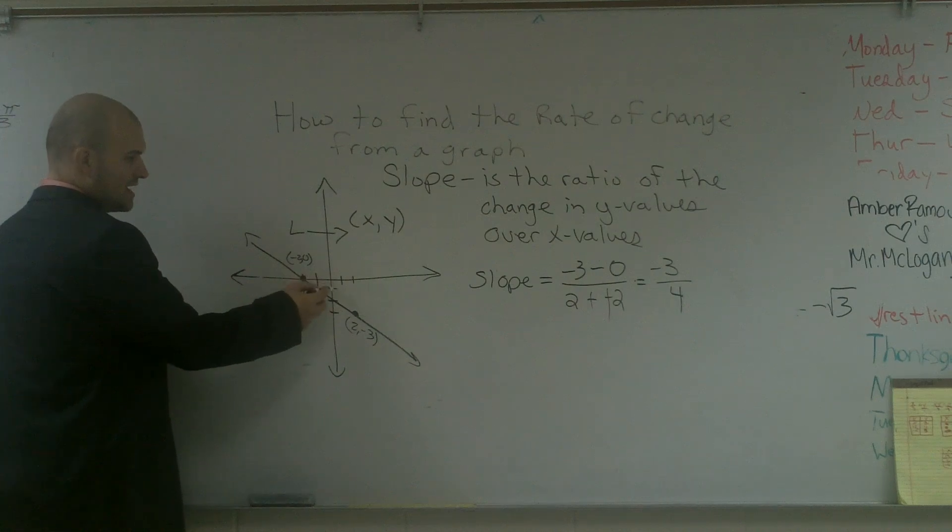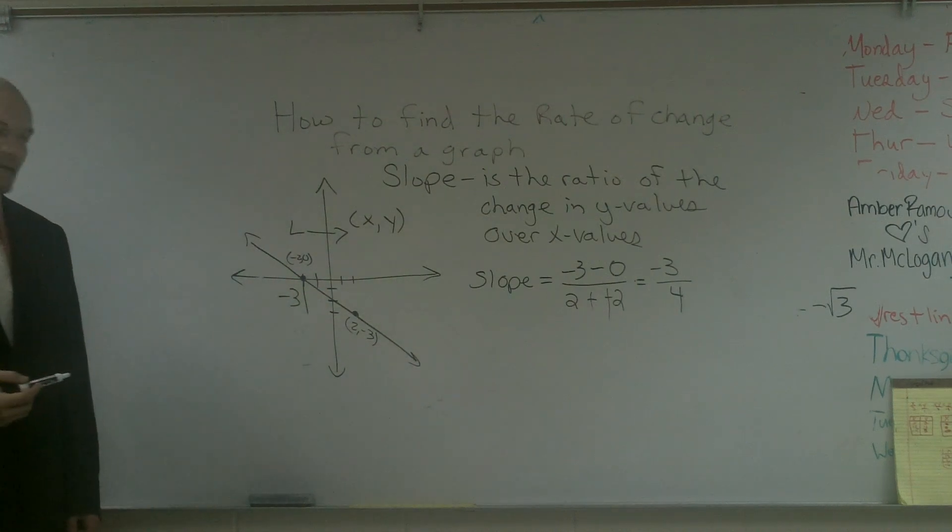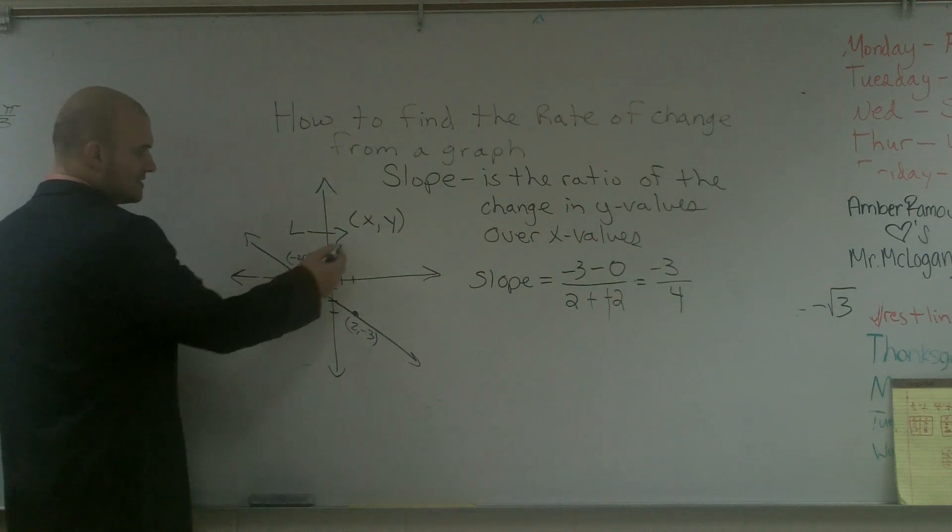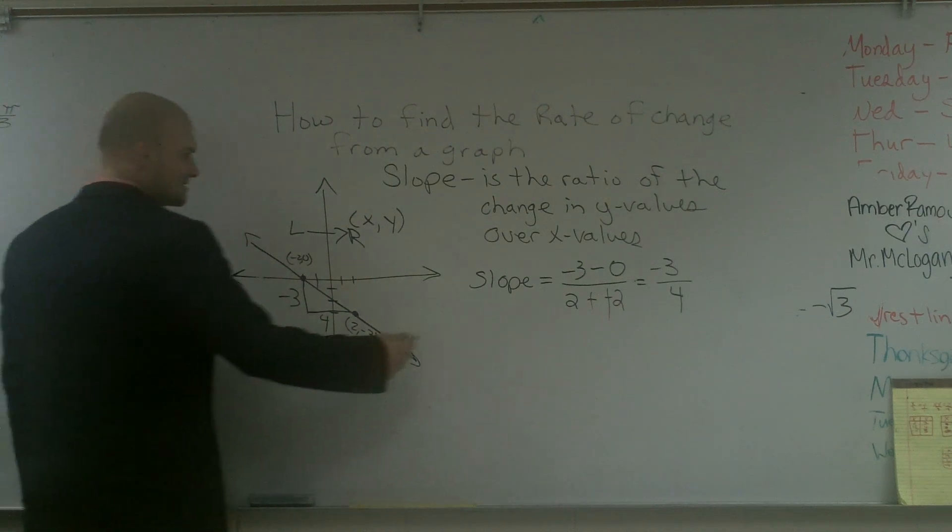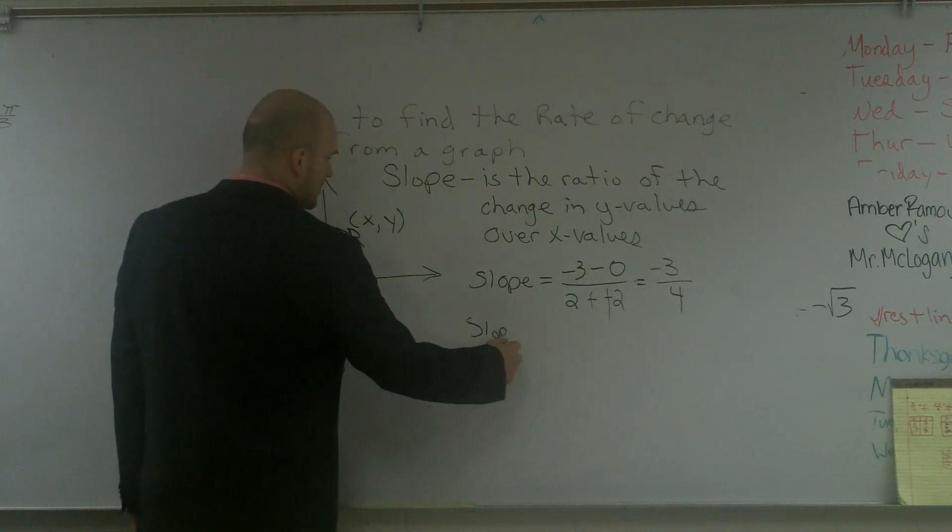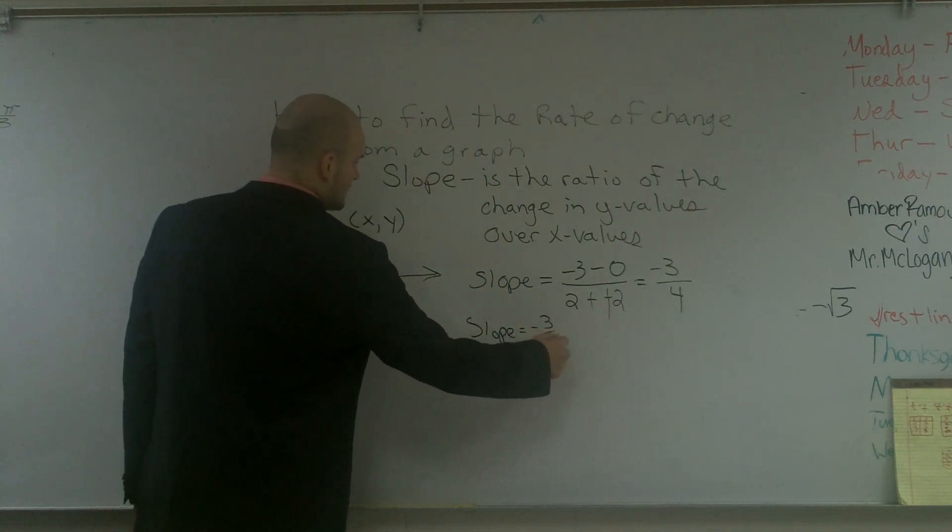You're going down 1, 2, 3. So you're going down negative 3. And then from left to right, how far am I going over? You're going over 1, 2, 3, 4. Therefore, my slope is negative 3 over 4.